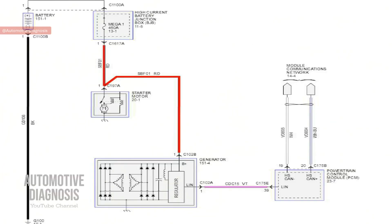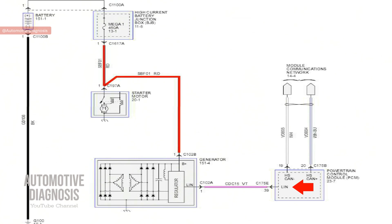Looking at the wiring diagram on screen — this is the charging system diagram for this exact car. We can see the alternator here, and the PCM or engine control module here. That single wire is the LIN bus, connected between the PCM and the alternator, going all the way to the voltage regulator inside the alternator. LIN bus is a single-wire network used for many different applications. We have other videos on the channel explaining LIN bus and its different applications.